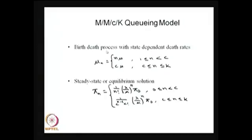Therefore it is also a birth-death process. The birth rates are all lambda because it is an infinite source population. The death rates are state-dependent: N times mu for states 1 to C, and C times mu from state C to K.